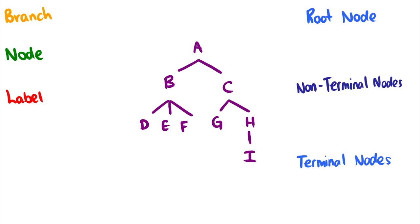The first thing we need to do is talk about terminology. Branches are just the lines that split up our nodes. A branches to B and A branches to C — there is a branch connecting A and B, and a branch connecting A and C.